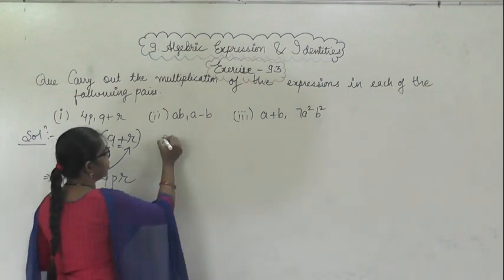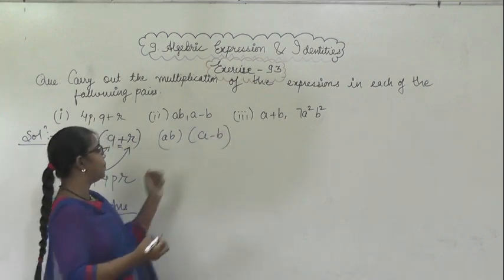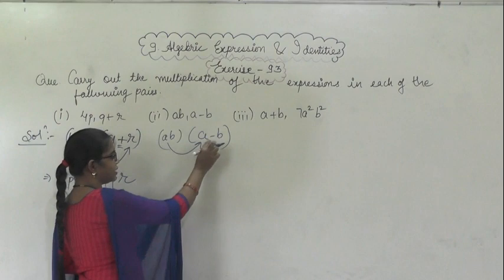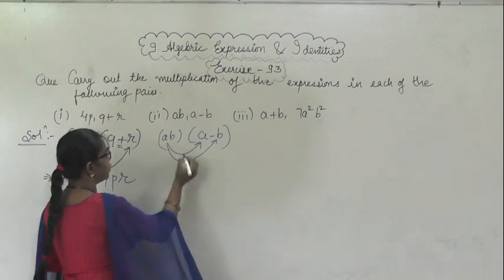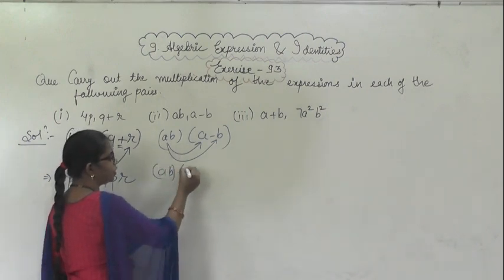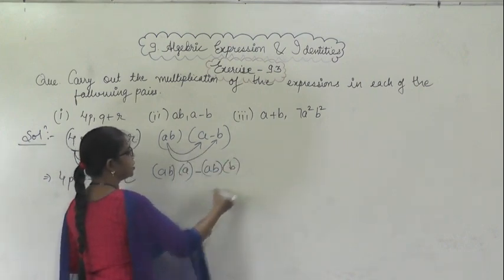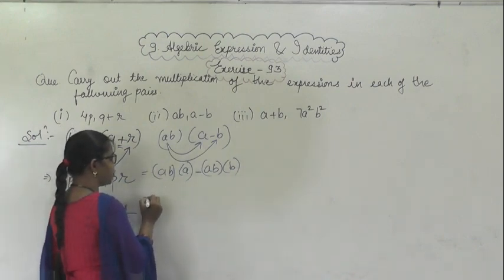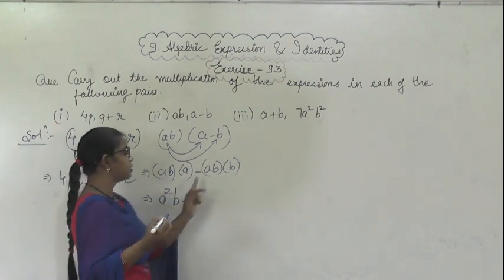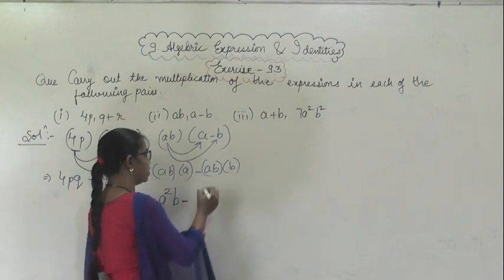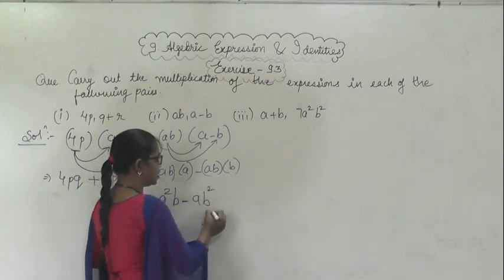Similarly, here two expressions are given: ab and (a - b). First, ab will be multiplied with a, then the subtraction sign will be there, and again ab will be multiplied with b. So we get: ab into a minus ab into b, which gives a²b minus ab².